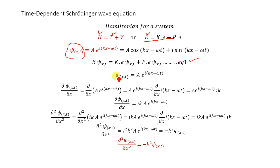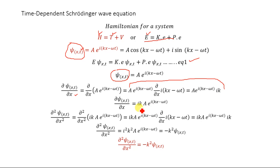The wave function is ψ = Ae^(i(kx − ωt)). Taking the first partial derivative with respect to position x, we get ∂ψ/∂x = ik · Ae^(i(kx − ωt)). When we differentiate an exponential, we get the exponential again multiplied by the derivative of the exponent. So the first partial derivative of ψ equals ik · Ae^(i(kx − ωt)).